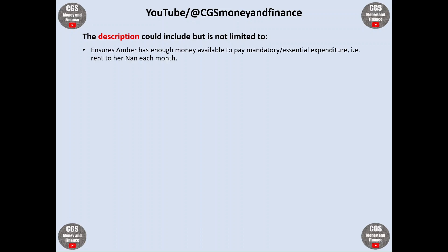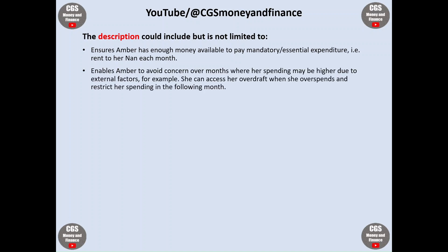It ensures Amber has enough money available to pay mandatory or essential expenditure, i.e. rent to her nan each month. It enables Amber to avoid concern over months where her spending may be higher due to external factors. For example, she can access her overdraft when she overspends and restrict her spending in the following month.